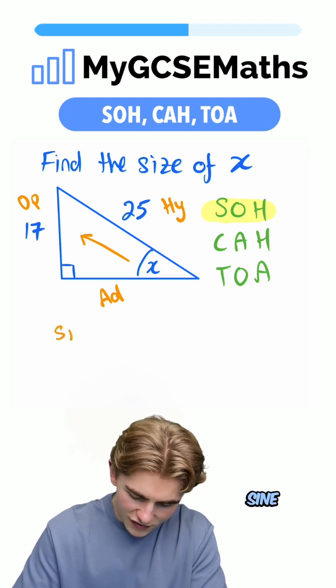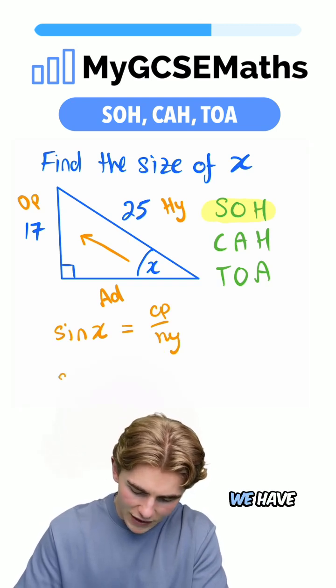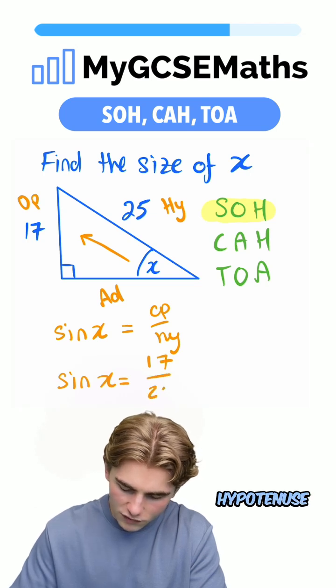SOH tells us that sine of our angle equals the opposite side over the hypotenuse. We can fill in the gaps. We have sine X equals our opposite side, 17, over the hypotenuse, 25.